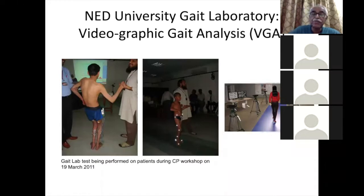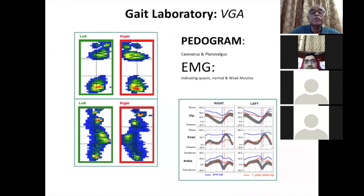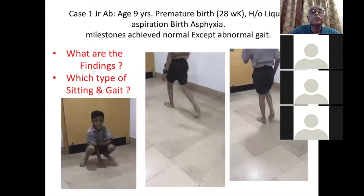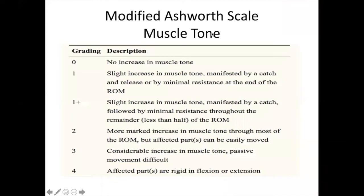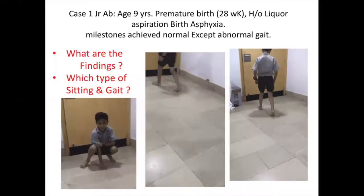Since this full facility is not available here, we do video-recorded assisted assessment. You must also know certain scores regarding the muscle tone — we commonly use the Ashworth score in grades one to four. Then there is muscle power grading, which is usually used in poliomyelitis and other disorders. After this assessment, this is basically what we do.